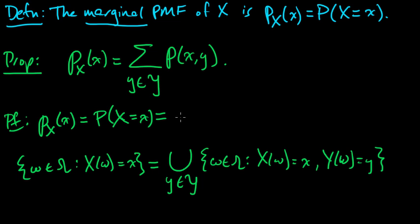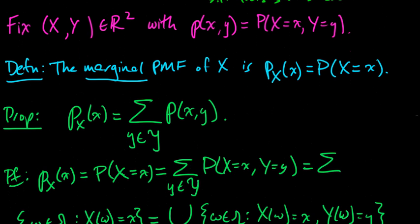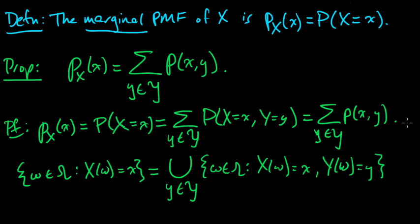And so therefore, this is equal to—by countable additivity of a probability measure, because this is a union of disjoint sets—the sum over all the y's of the probability that X equals x, Y equals y. That's just the probability of this set. And this is just the joint PMF. So that's the result. It's just a very elementary property of the marginal.